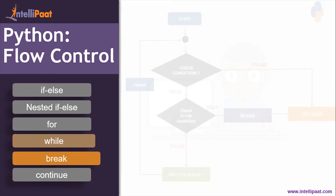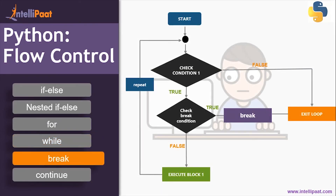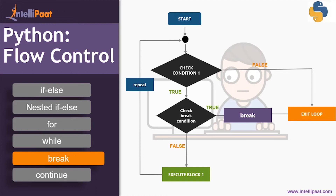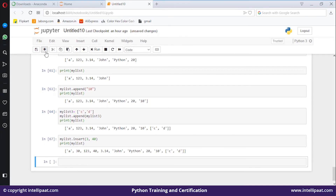This was about the while statement. Next, let's learn about the break statement. The break statement is used to break the loop at a certain condition. Looking at the flowchart — start, check the condition. If true, then check the break condition. If the break condition is false, execute block one and repeat the loop. If the break condition is true, break and exit the loop entirely.